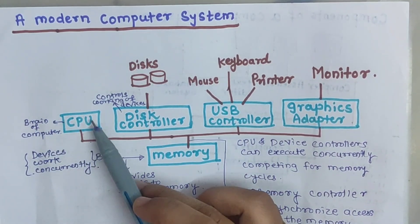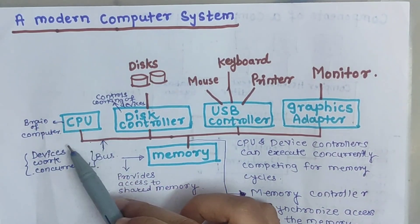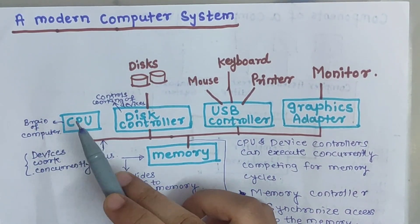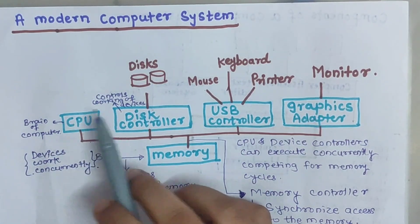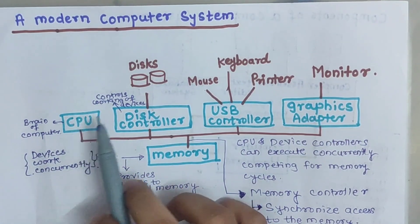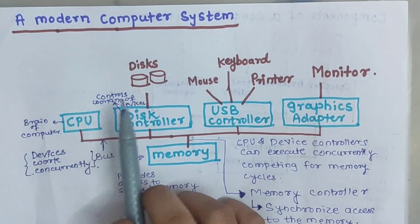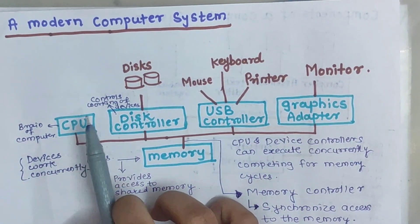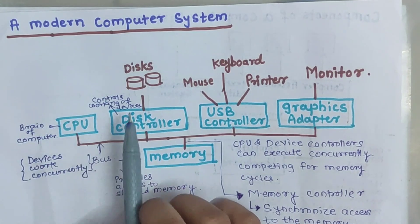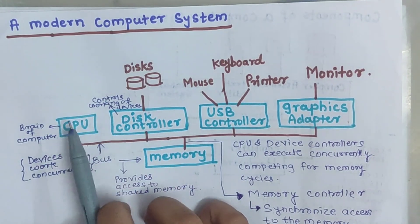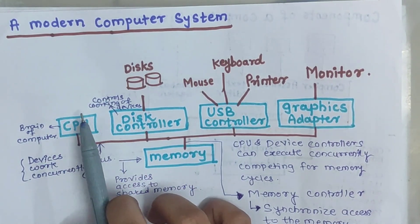CPU is called as the brain of a computer. It performs various activities or tasks related to computations. It holds the data temporarily and it also has a permanent storage of data.